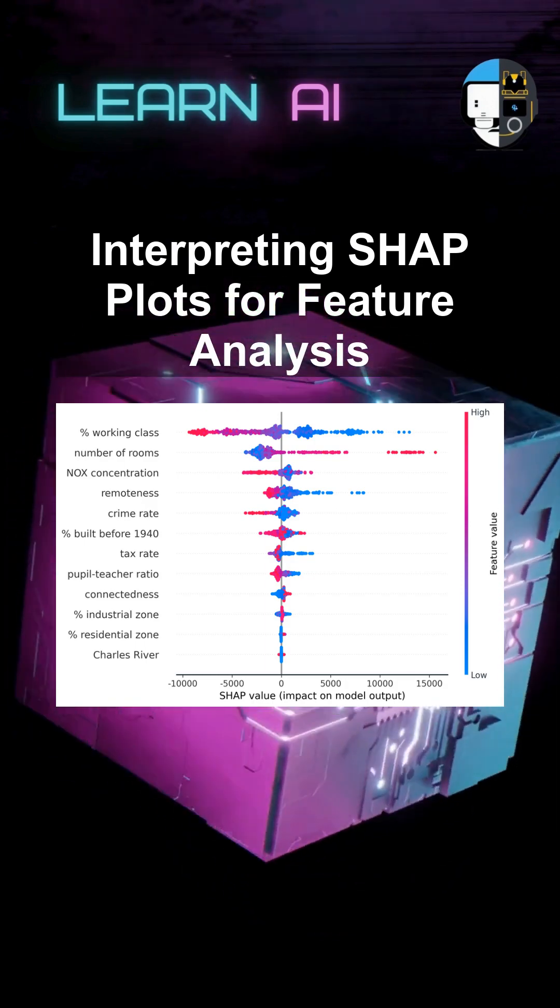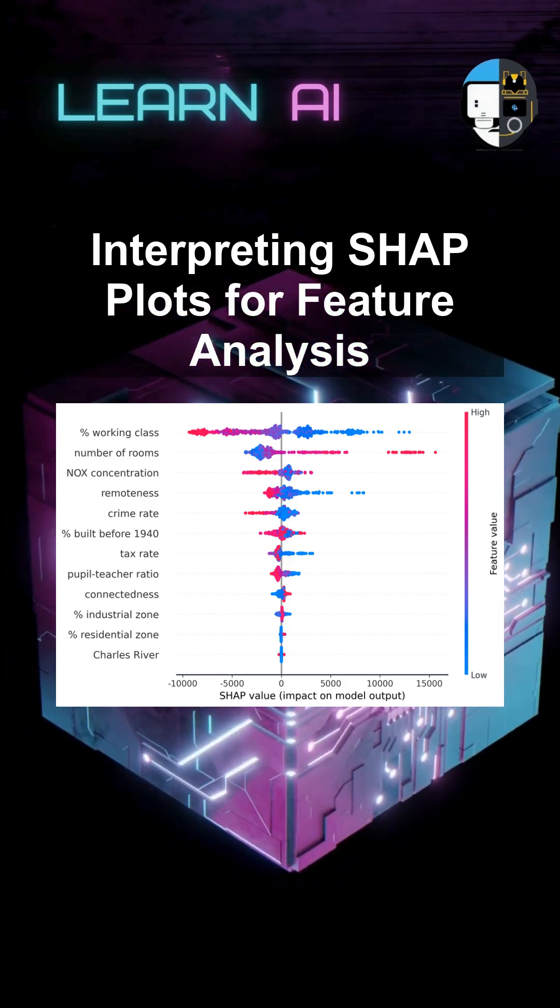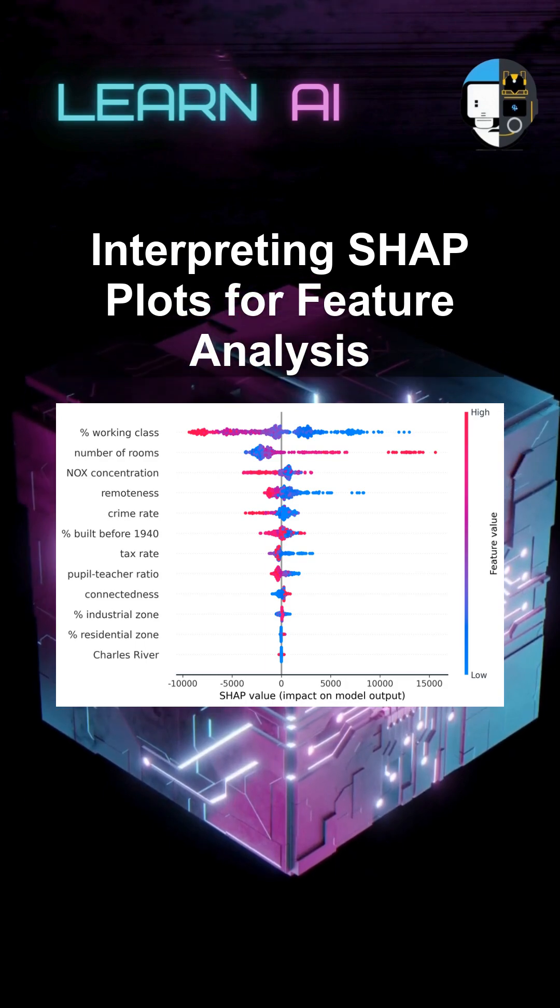The most common is the SHAP summary plot, which provides a high-level overview of feature importance. In a summary plot,